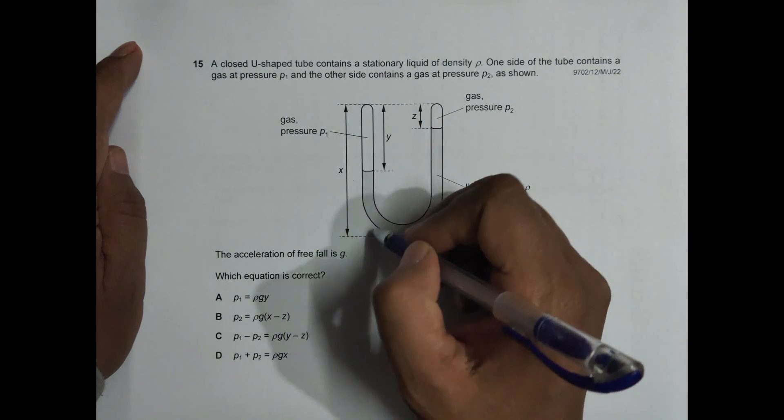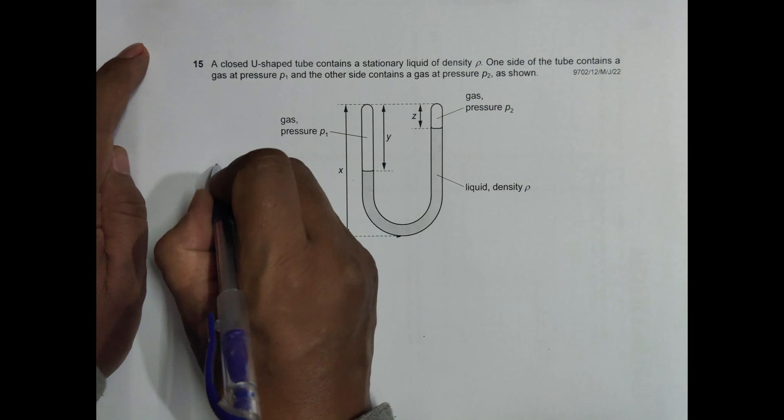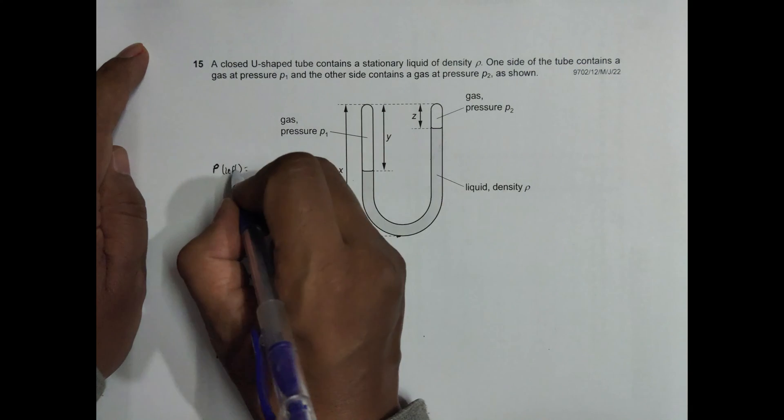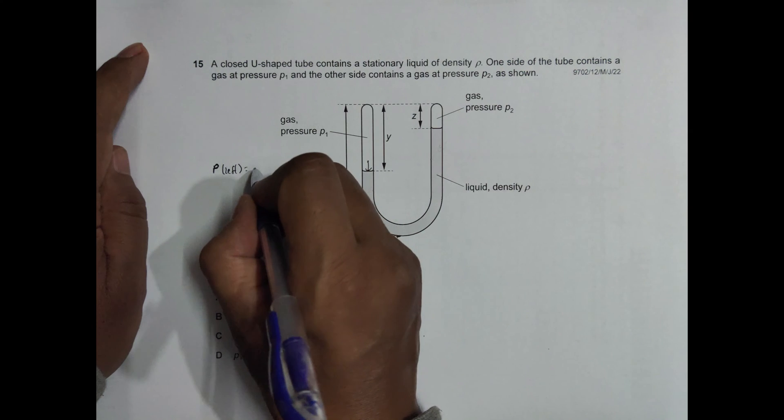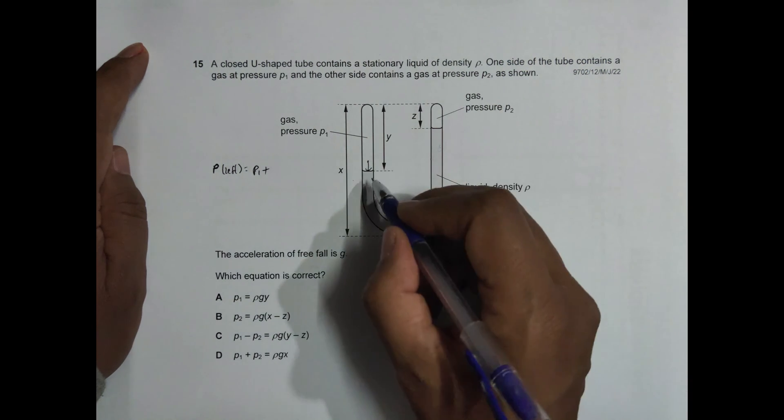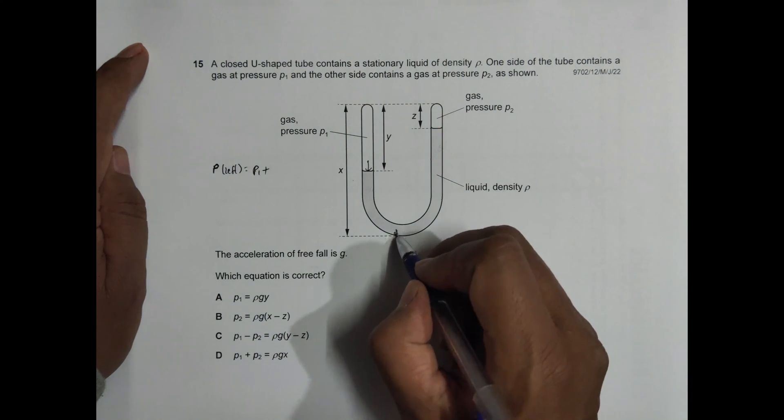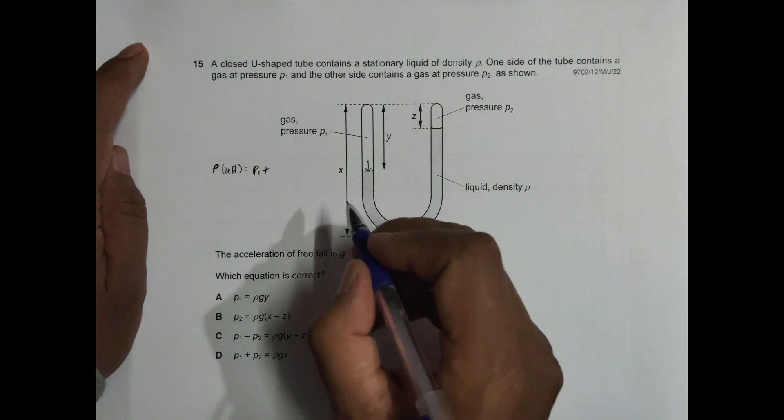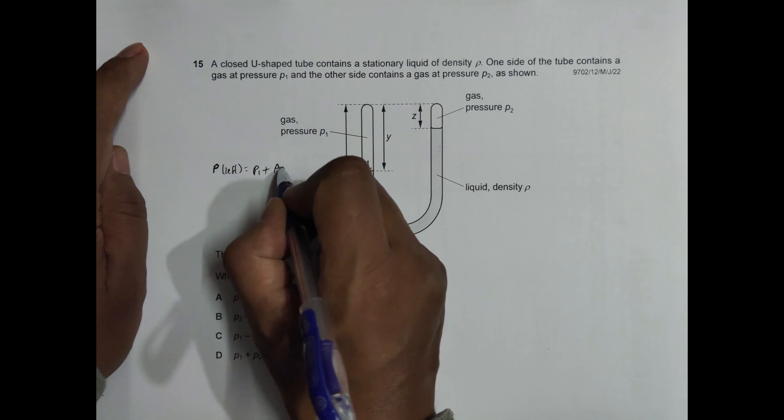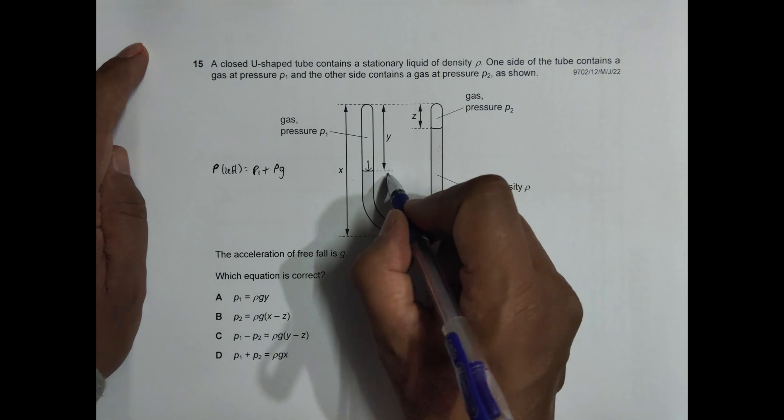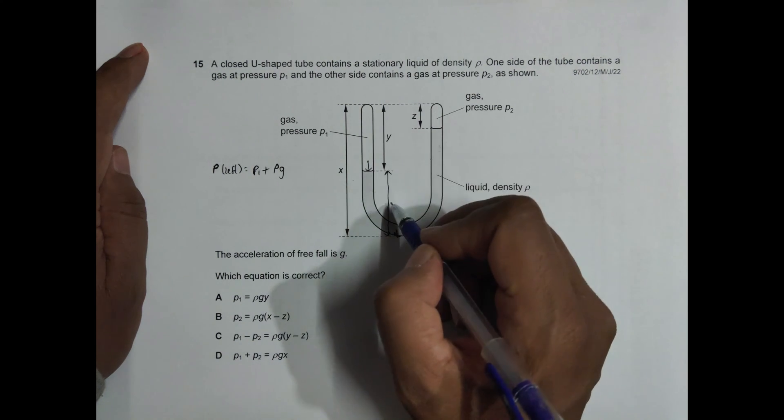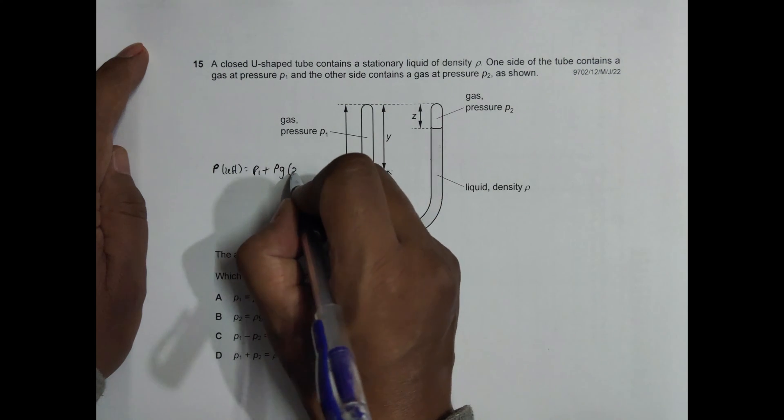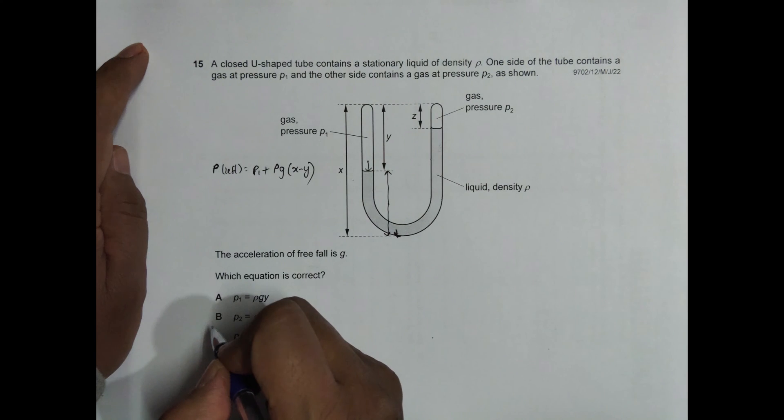The pressure through this column—pressure left—is equal to first this pressure P1 plus the pressure applied by the liquid mercury here. So it should be ρg into this distance from here to here, and this height should be equal to x minus y.